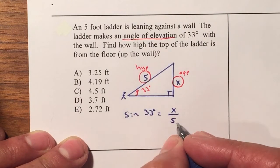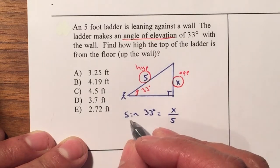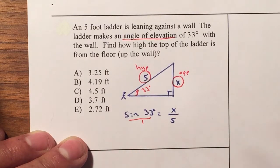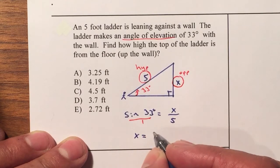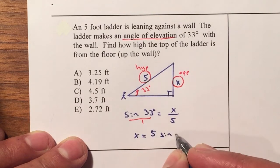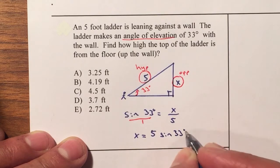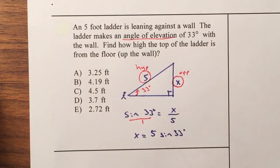From there we can cross multiply. I will place the sine of 33 over 1. 1 times X is X and 5 multiplied by the sine of 33 degrees. From there I'm going to use my calculator to type that in.